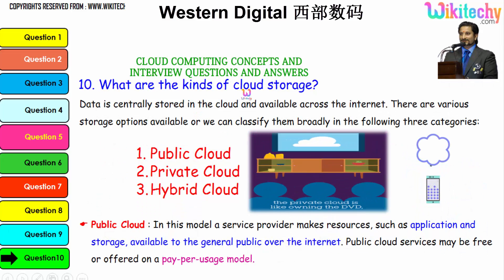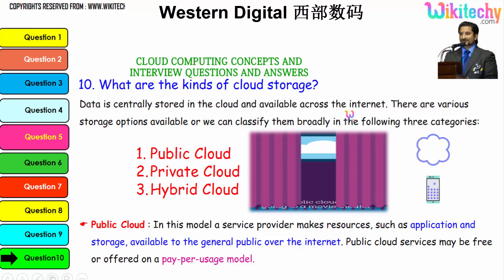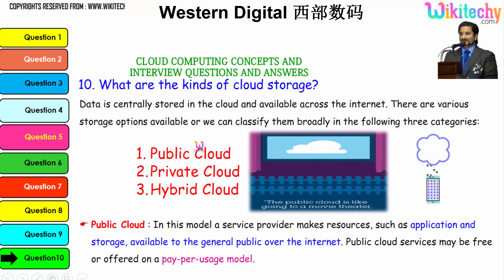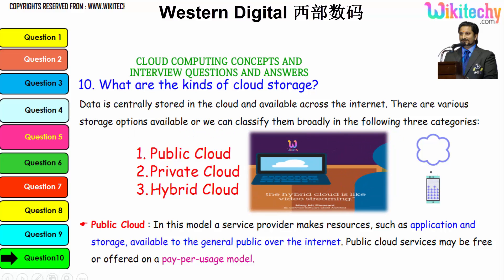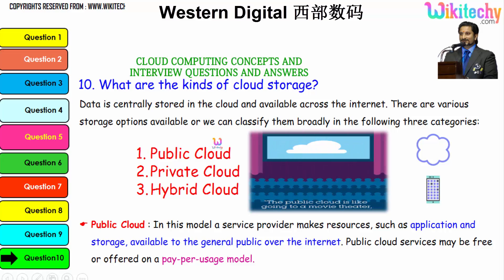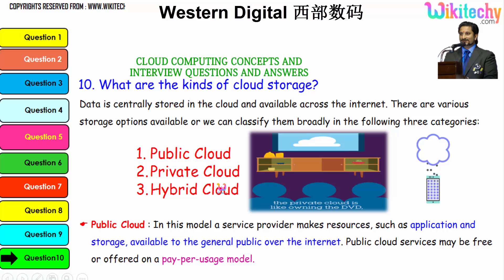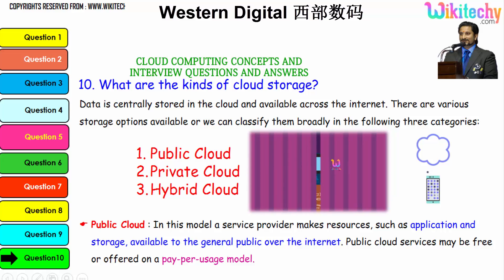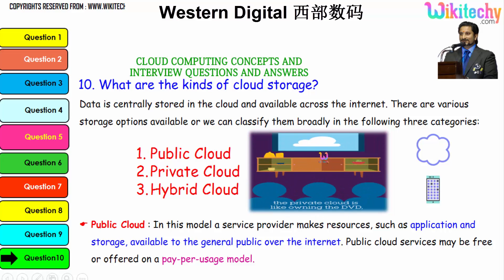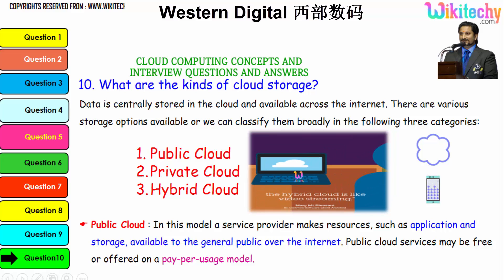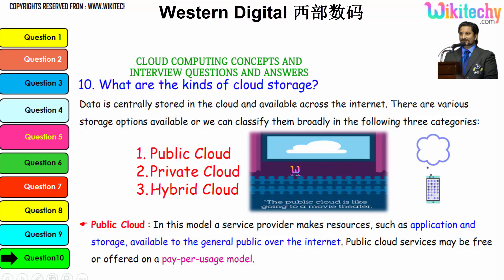Now let's talk about the kinds of cloud storage. Data is centrally stored in the cloud and available across the internet. There are three major storage options: public cloud, private cloud, and hybrid cloud. The public cloud is like going to a movie theater, private cloud is like owning a DVD at home, and hybrid cloud is like video streaming — a mix of private and public.